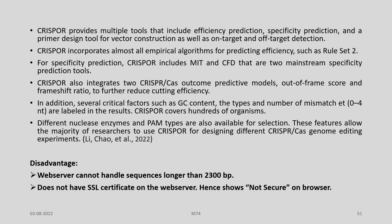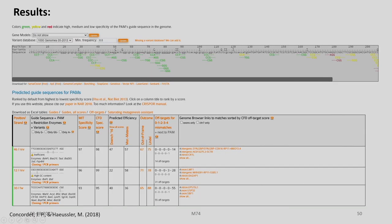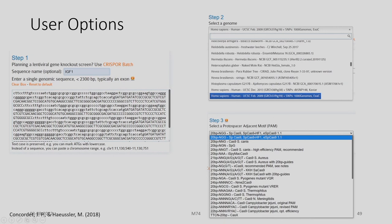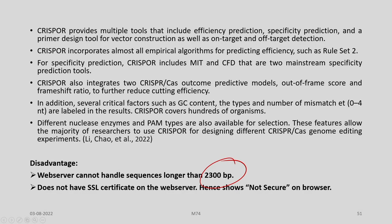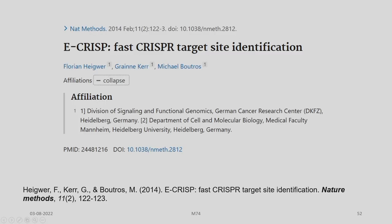However, there is a disadvantage: the web server cannot handle sequences longer than 2300 base pairs, so only a single genomic sequence shorter than 2300 base pairs should be entered.